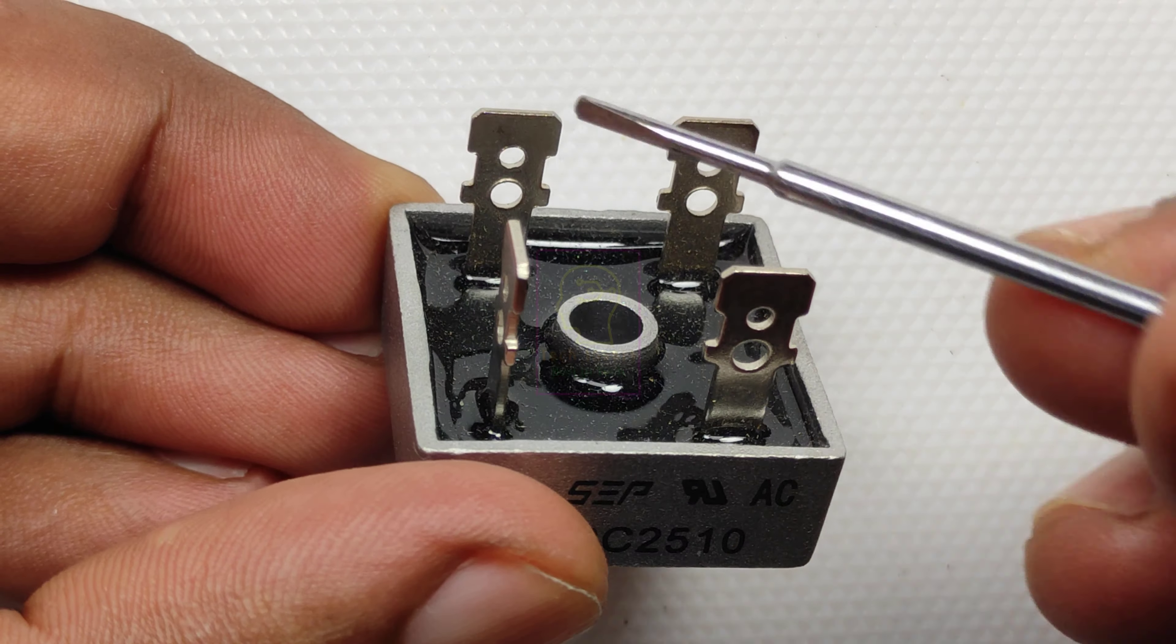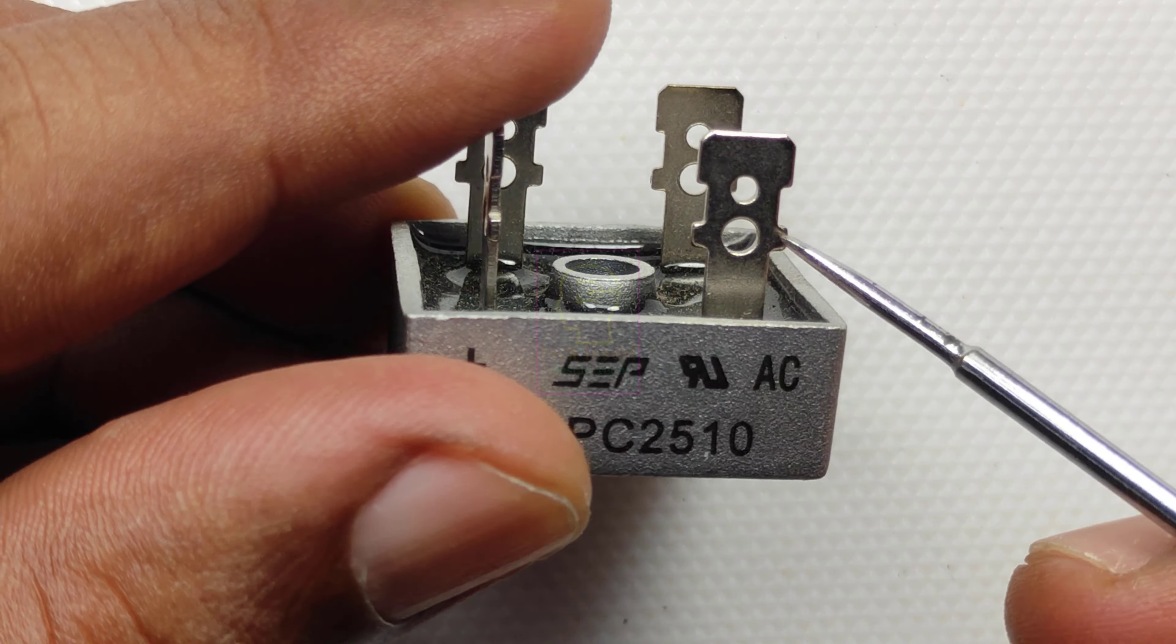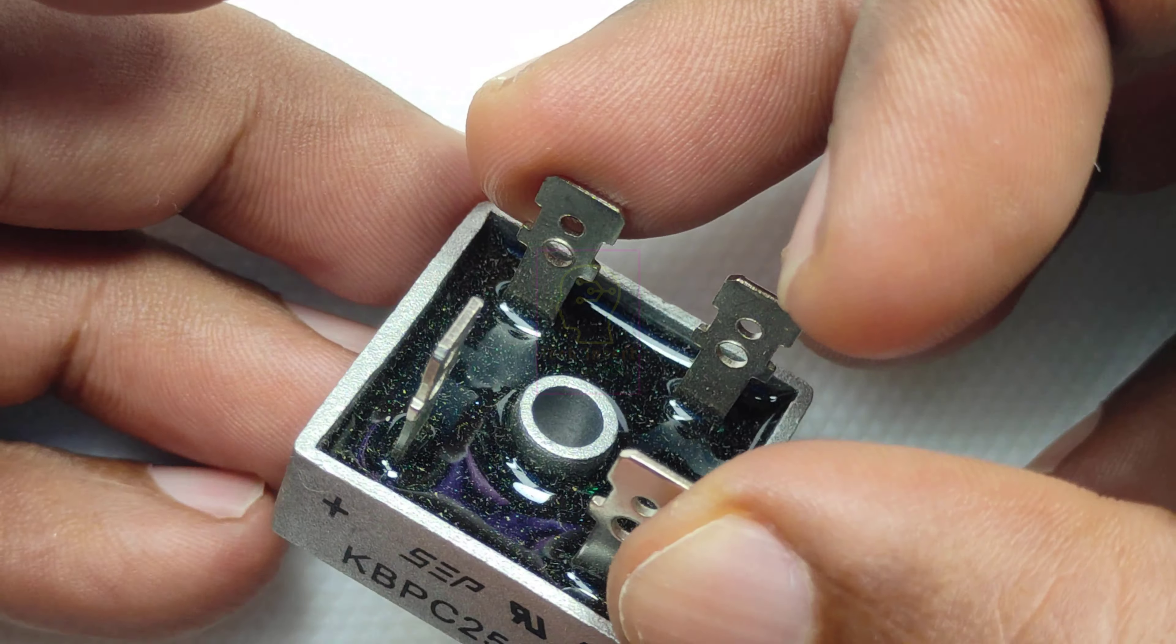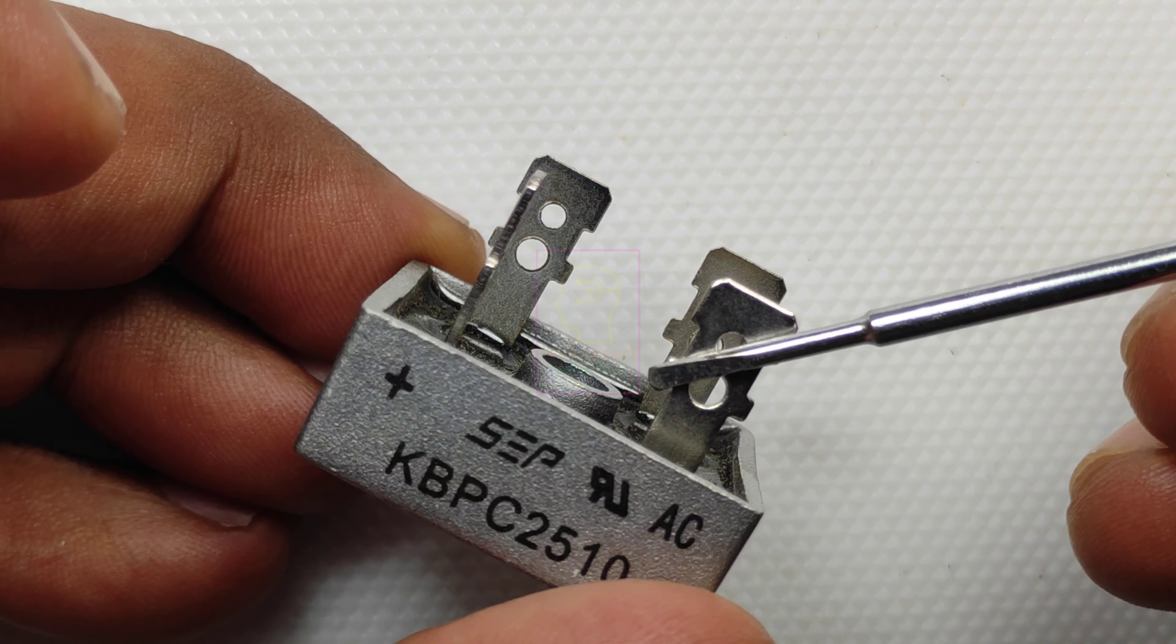Its number is KBPC 2510. 25 means 25 ampere it can handle, and 10 means 10 into 100 volt. That means 1000 volt it can handle.